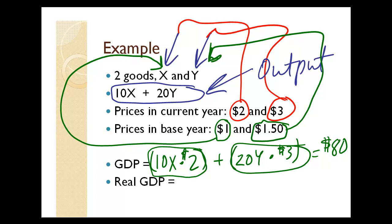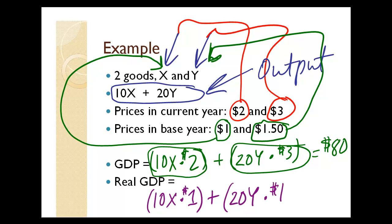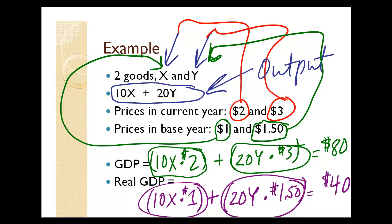For real GDP, we take our current year output — 10X — but this time we multiply it by base year prices: $1.00, plus our 20Y being produced in the current year times the base year price of $1.50. So this is $10.00 plus $30.00, which equals $40.00. GDP is $80.00; real GDP is $40.00.